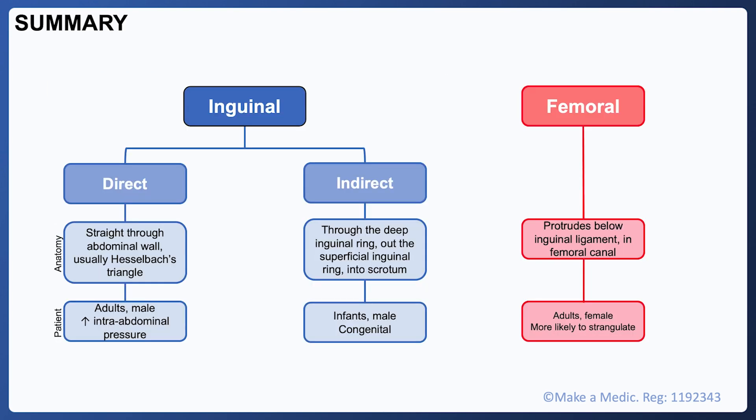Now that we have recapped the anatomy, we can summarise the main differences between inguinal and femoral hernias. Direct inguinal hernias are more common in adult males, and key risk factors include anything that causes increased intra-abdominal pressure, such as a chronic cough or constipation. Indirect inguinal hernias are more common in babies and young children and are due to the processus vaginalis remaining open after birth.